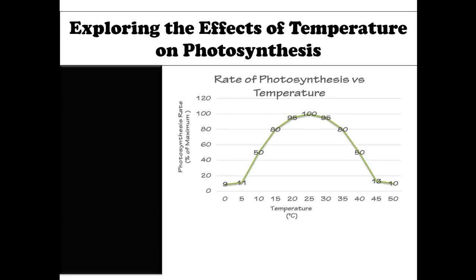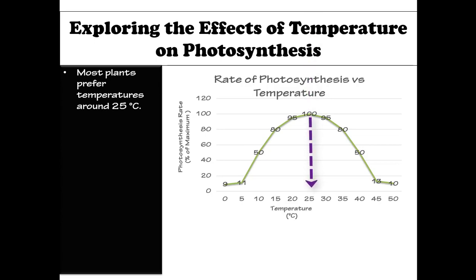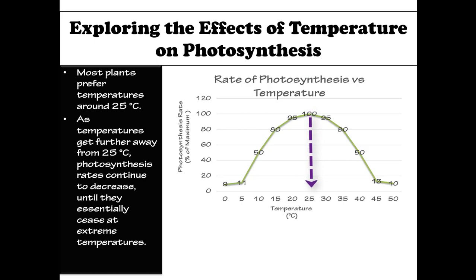When we explore the effects of temperature on photosynthesis, we find that most plants prefer temperatures of around 25 degrees Celsius. As temperatures get further away from 25 degrees Celsius, photosynthesis rates continue to decrease until they essentially cease at extreme temperatures.